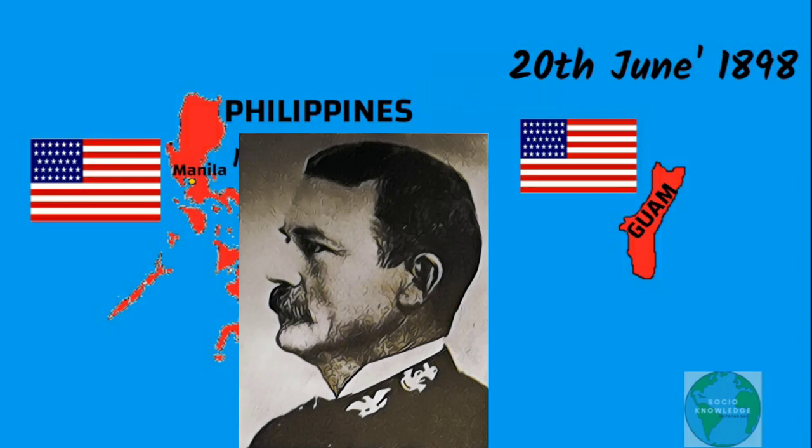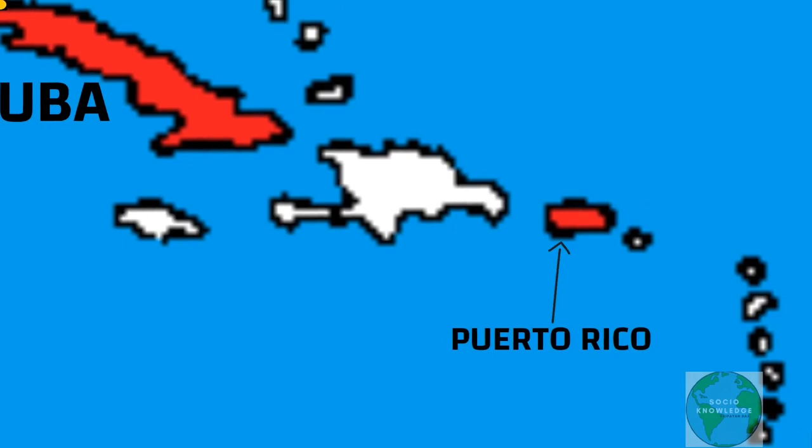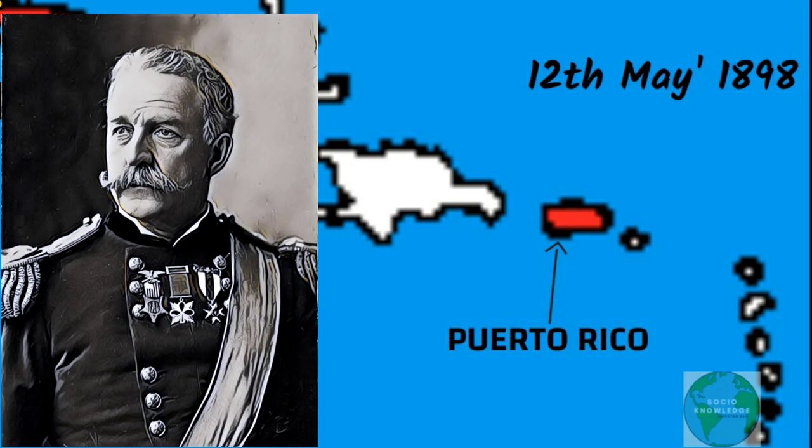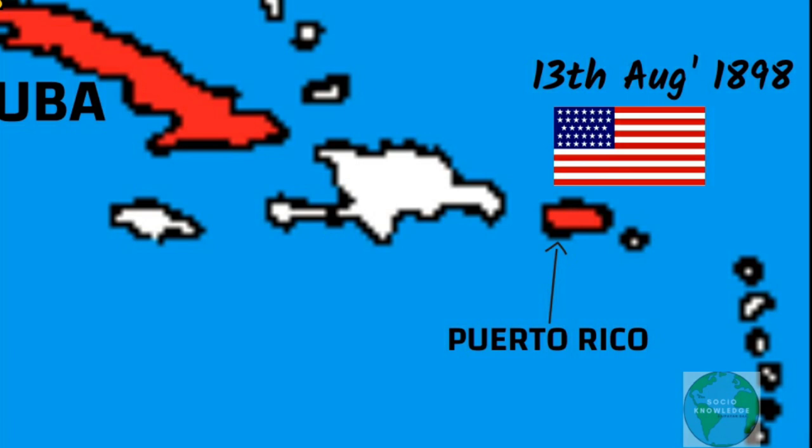Now let's see the Caribbean. On May 12, 1898, the US Navy blockaded the island of Puerto Rico, and on July 25, 1,300 US troops under General Nelson Miles landed on the coast of Guanica. After a few battles, on August 13, 1898, the Spaniards surrendered Puerto Rico to the US, and Puerto Rico came under the control of the United States.